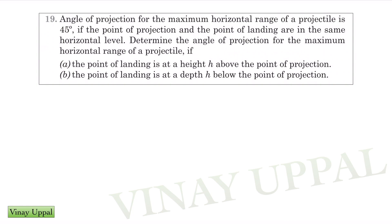So let's take a look. This is question number 19 of the build up your understanding. Angle of projection for the maximum horizontal range of a projectile is 45 degrees. We know that the point of projection and the point of landing are in the same horizontal level. Determine the angle of projection for the maximum horizontal range of a projectile if the point of landing is at height h above the point of projection or point of landing is h below the point of projection.